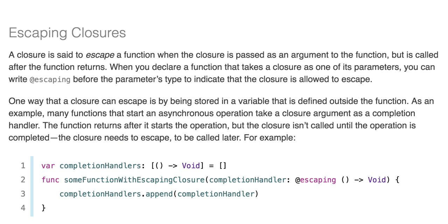Escaping closures: A closure is said to escape a function when the closure is passed as an argument to the function but is called after the function returns. When you declare a function that takes a closure as a parameter, you can write @escaping before the parameter's type to indicate that the closure is allowed to escape. One way a closure can escape is by being stored in a variable defined outside the function. As an example, many functions that start an asynchronous operation take a closure argument as a completion handler, and the function returns after it starts the operation, but the closure isn't called until the operation is completed, so the closure needs to escape to be called later — for example, for completion handlers.